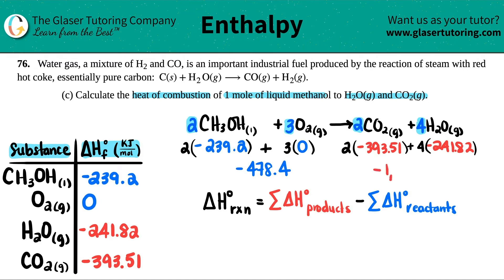For the product side, it's 2 times -393.51 plus 4 times -241.82, and I get -1754.3.